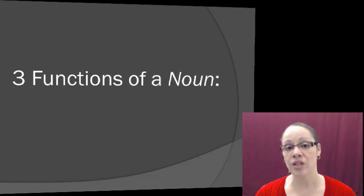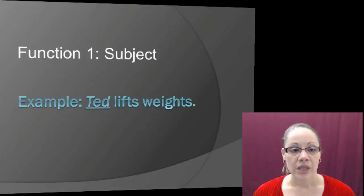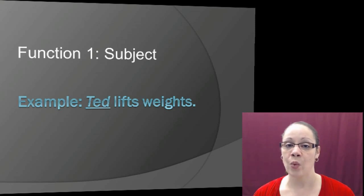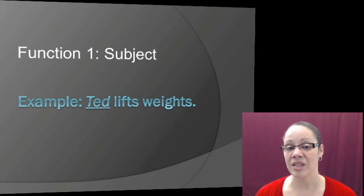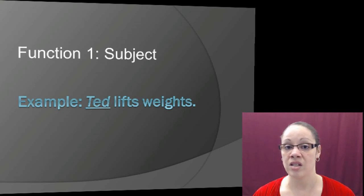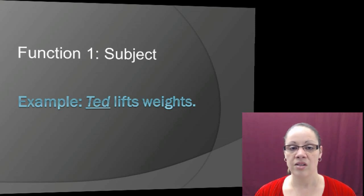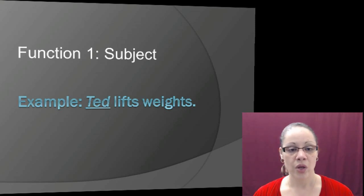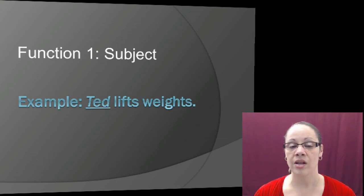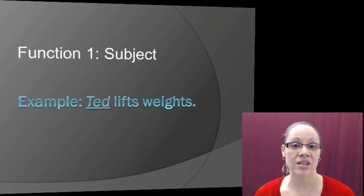The first function of a noun is serving as the subject of a sentence. Looking at the example 'Ted lifts weights' — 'lifts' is the verb, so we ask: who or what lifts? The answer is Ted. Therefore, Ted is the subject of the sentence. Ted is a person, and thus a noun functioning as the subject.